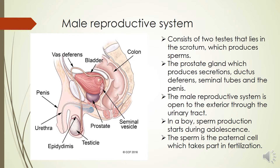The male reproductive system consists of two testes. The two testes lie in the scrotum. These help to produce sperms. And the prostate gland which produces secretions, ductus deferens, seminal tube, and the penis. The male reproductive system is open to the exterior through the urinary tract.